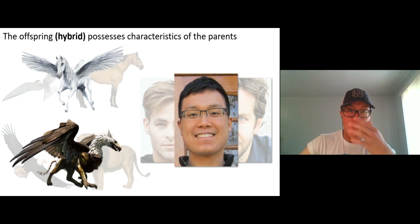Mentioned at the beginning, we'll talk about the hybridization theory that the offspring possesses characteristics of the parents, like Pegasus looks like half horse, half bird, Griffin, half eagle, half lion, me, half Chris Pine, half Bradley Cooper. I'm sure you know that.